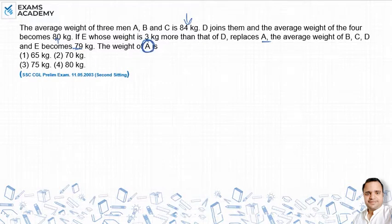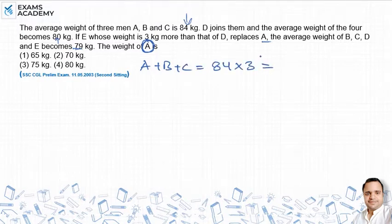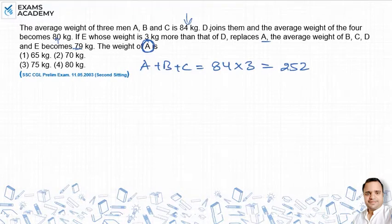तो question में हम proceed कैसे करेंगे - सबसे पहले हम find out करेंगे A, B, C का total weight. तो A plus B plus C का जो total weight आएगा, 84 into 3 multiply करके देखते हैं - 252 आ गया है. यह है A, B, C का total weight. इसके बाद इसमें D जुड़ जाता है.